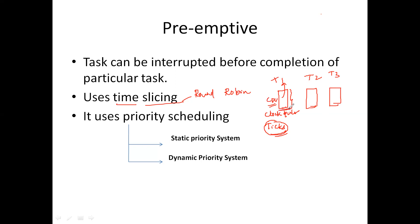Once the time is completed, whether the task is completed or not, the CPU will be allocated to the next task. If the task is completed before the time duration, then the next task will be allocated.